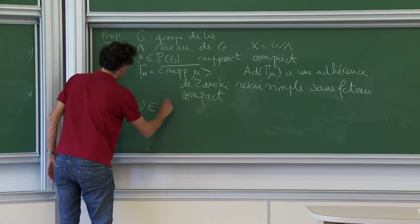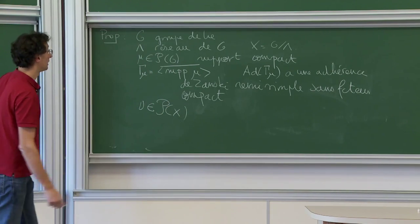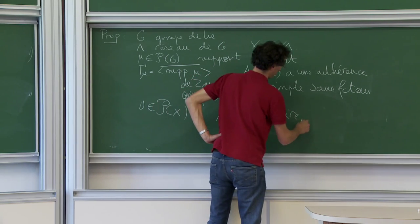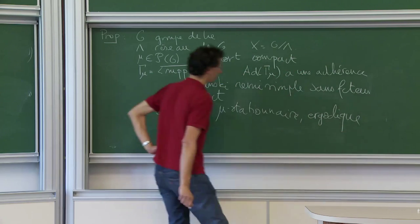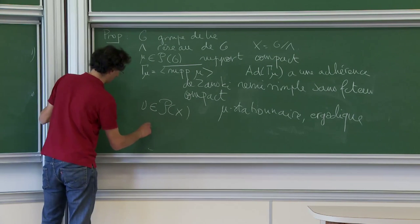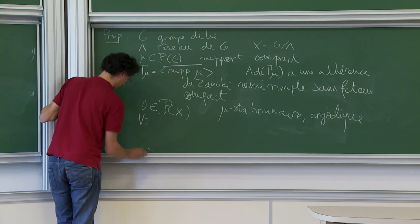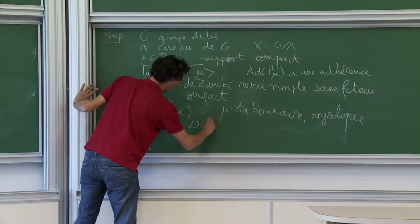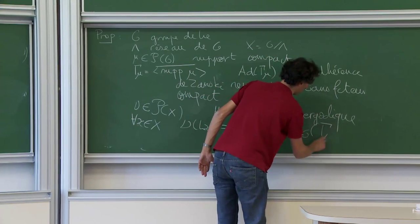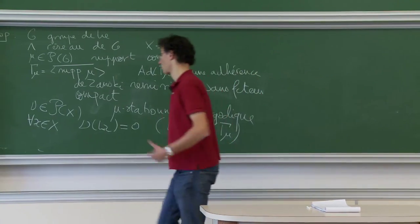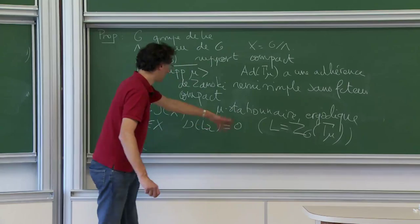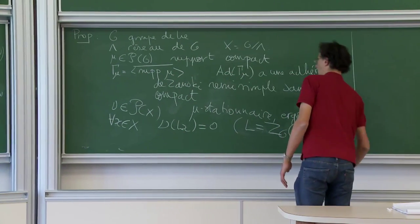Je me donne nu une mesure de probabilité borélienne sur X, qui est mu-stationnaire et ergodique — c'est-à-dire un point extrémal parmi les mesures de probabilité stationnaires. Et il y a une hypothèse de non-dégénérescence dont on a parlé pendant les séances précédentes : je suppose que quel que soit x dans X, la mesure de la L-orbite de x est nulle, où L est le centralisateur de Gamma_mu. Quand le centralisateur est discret, je suis juste en train de dire que la mesure n'a pas d'atome.